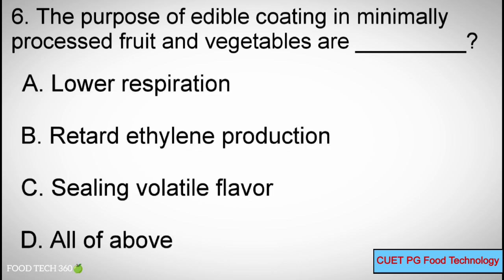Q6: The purpose of edible coating in minimally processed fruits and vegetables are? A. Lower respiration, B. Retard ethylene production, C. Sealing volatile flavor, D. All of the above.